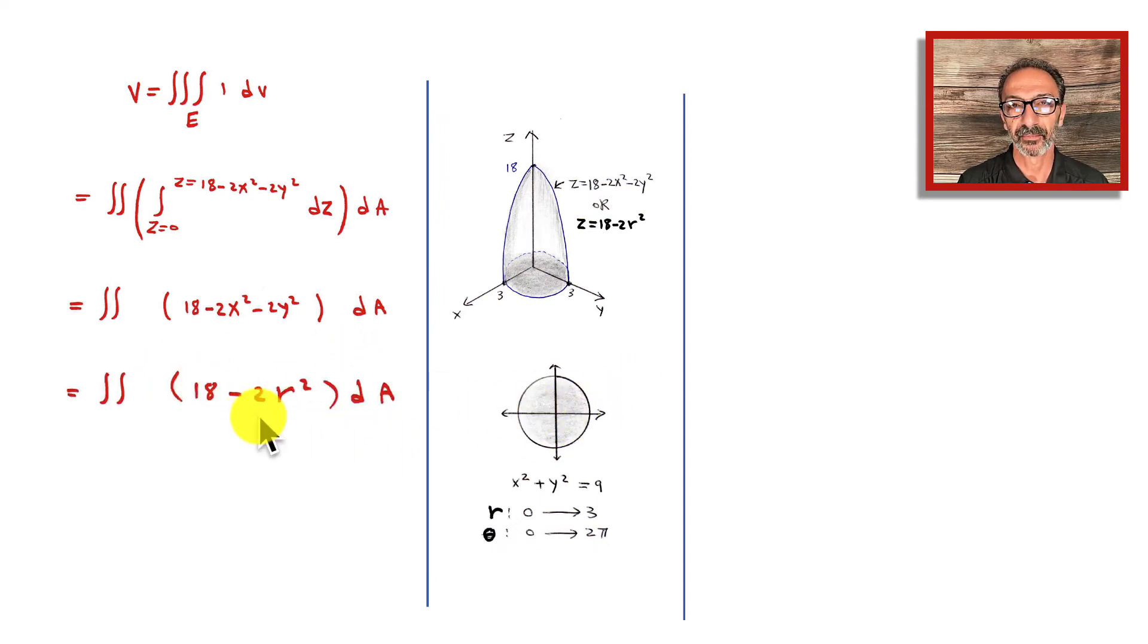Changing this to polar coordinates to work on this region, I have double integration of 18 minus 2r squared dA. Breaking this down into two integrations with bounds, we're going to use r dr dθ, where r goes from 0 to 3 and theta goes from 0 to 2π.